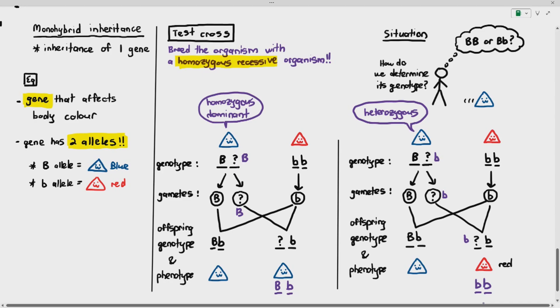So by crossing it with a homozygous recessive organism and by looking at the offspring, you are able to determine the unknown genotype of the parent. That's just essentially what a test cross is all about. That's it.